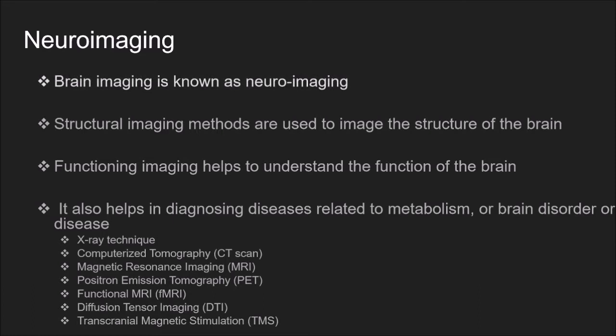Brain imaging is also known as neuroimaging. Structural imaging methods are used to image the structure of the brain. These procedures help to diagnose any injury or disease in the brain, such as tumors. Functional imaging helps to understand the functions of the brain and also helps in diagnosing diseases related to metabolism, brain disorders, or disease.